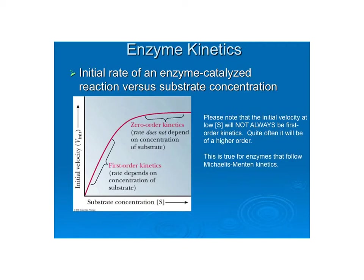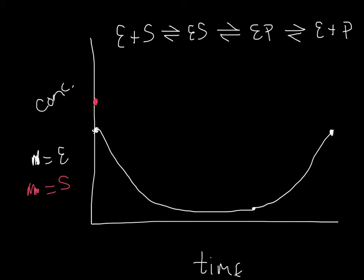This brings us to Michaelis-Menten kinetics, also called steady state kinetics. Before going into that, I want to explain the rationale. We've already discussed the concentration of free enzyme and how it decreases initially but you get it back. Now we're going to discuss the concentration of substrate — what happens to free substrate as time goes by?